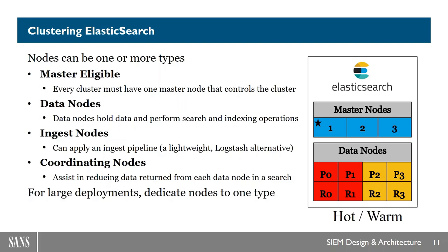Data nodes are where the data is actually held, in what are called indexes. Indexes very typically will be one per day for each type of log — for example, all of today's firewall logs might be in one index. That index is broken up into multiple pieces called shards, distributed across all the nodes to optimize search speed. Shards can be primary or replica shards. The more replica nodes you have, the more copies you have of the same data, and therefore search will go faster — and adding more data nodes to a cluster further increases parallel search speed.